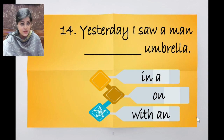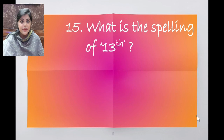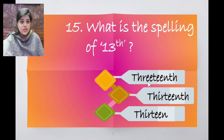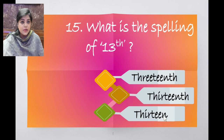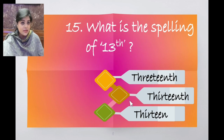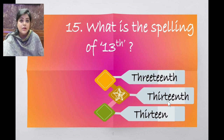Now let's see the options here — the letters T, H, I, R, T, W, N, TH. Thirteen is a cardinal number, but thirteenth is an ordinal number which tells the position. The correct answer is thirteenth. You have to learn all the ordinal numbers.